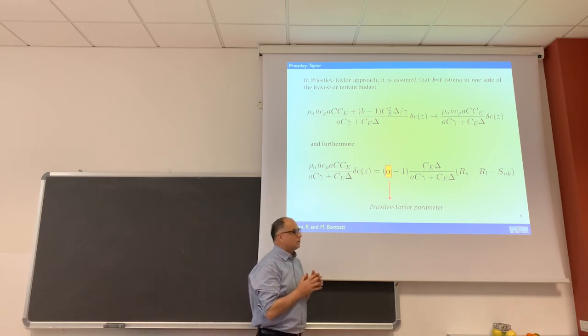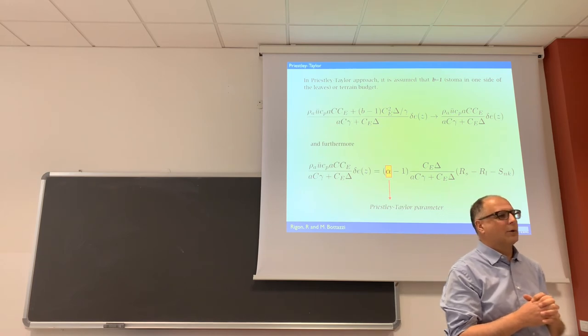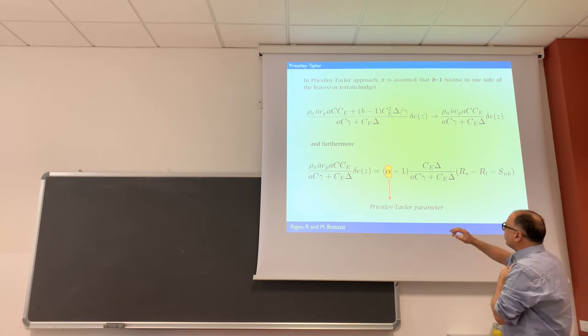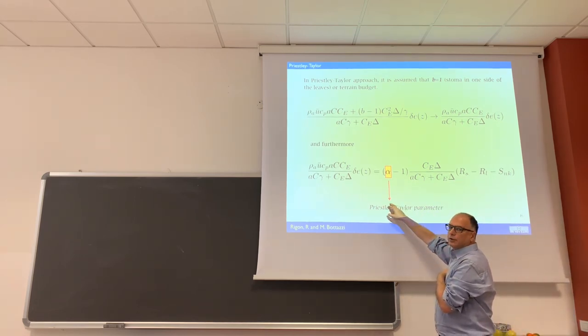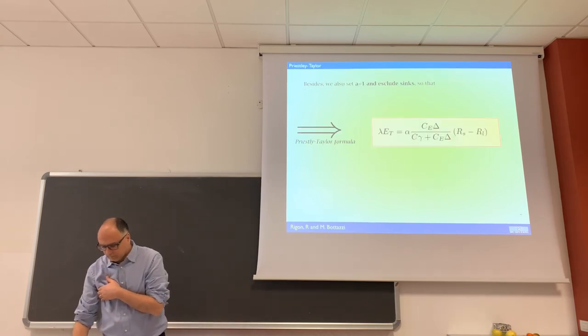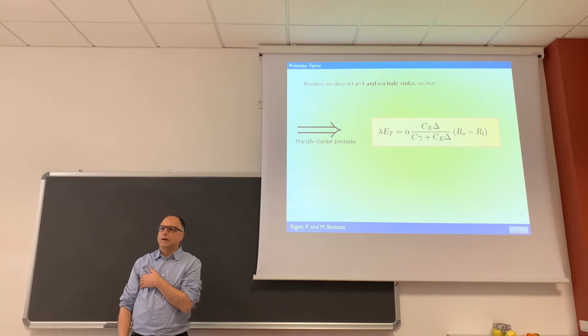There is a part of simplification which is pretty popular, also among my guys, which is to use the so-called Priestley-Taylor. Priestley-Taylor is a paper from 1978. In the Priestley-Taylor, essentially you take the evaporative demand, you put B equal to 1, and then further you assume that this evaporative demand is proportional to the radiation term according to the coefficient alpha minus 1. This alpha is called Priestley-Taylor coefficient. And so the equation simplified and further simplified becomes this one.